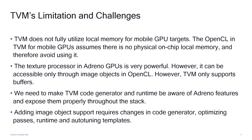Regarding TVM's limitations and challenges: TVM does not fully utilize local memory for mobile GPU targets. The OpenCL code generator in TVM for mobile GPUs assumes there is no physical on-chip local memory and therefore avoids using it. The texture processors in Adreno GPUs are very powerful; however, they can be accessed only through image objects in OpenCL. TVM only supports OpenCL buffers and not OpenCL image objects. Therefore, we need to make TVM's code generator and runtime be aware of Adreno features, and expose them properly throughout the stack. Adding image object support requires changes in code generator, optimization passes, runtime, and auto-tuning templates.